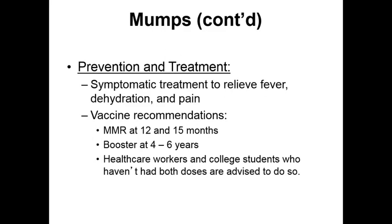Generally speaking, we focus on symptomatic treatment of mumps infections — relieving the fever, addressing dehydration, and pain relief. The vaccine for mumps is the MMR — measles, mumps, rubella vaccine. It's recommended that young people receive that vaccine at 12 and 15 months, with a booster between the ages of 4 and 6 years. If you are in healthcare or are a college student who hasn't had both doses, you're advised to receive a follow-up or booster dose to help minimize your chances of contracting this disease, as you're in a high-risk situation.